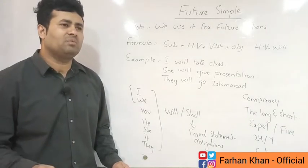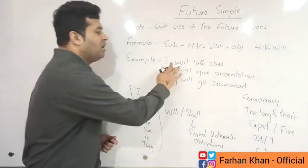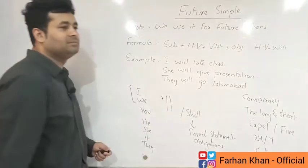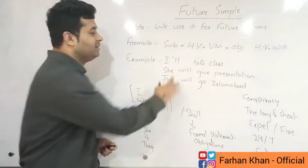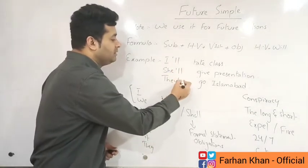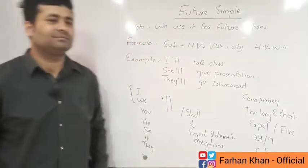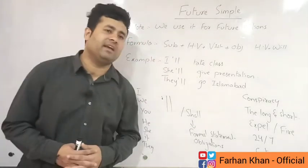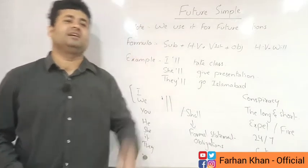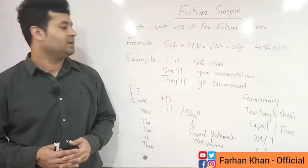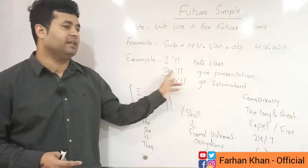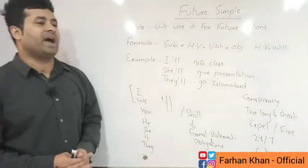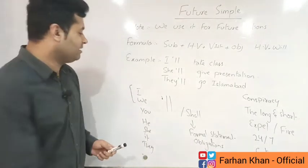However, when I observe British speakers, they always use the short form — the contraction. Instead of 'I will,' they say 'I'll.' For example, instead of 'They will play cricket,' they say 'They'll play cricket.' Instead of 'I will take class,' they say 'I'll take class.'